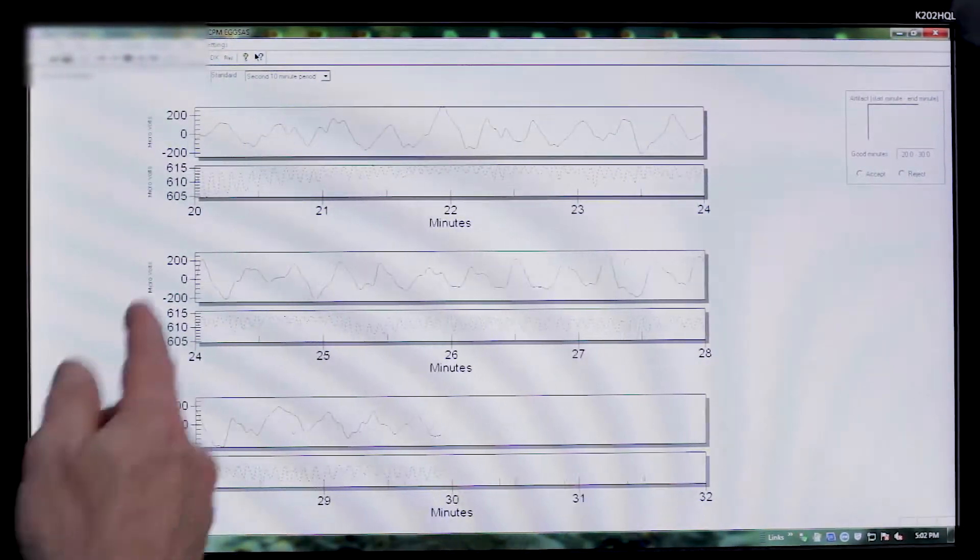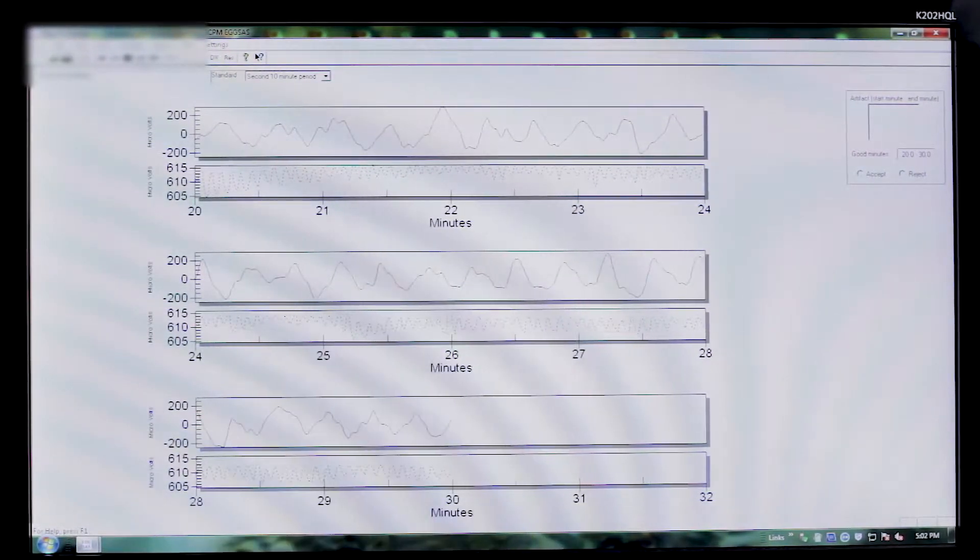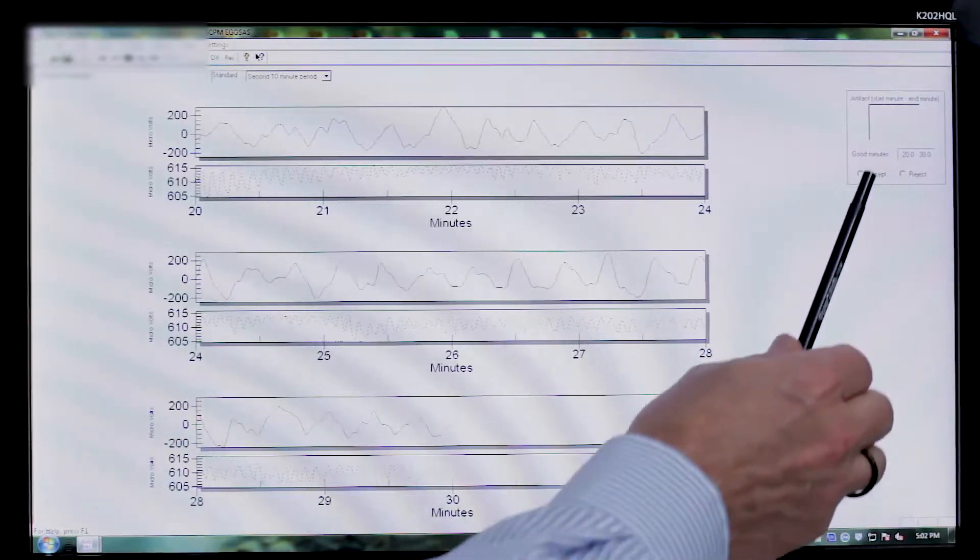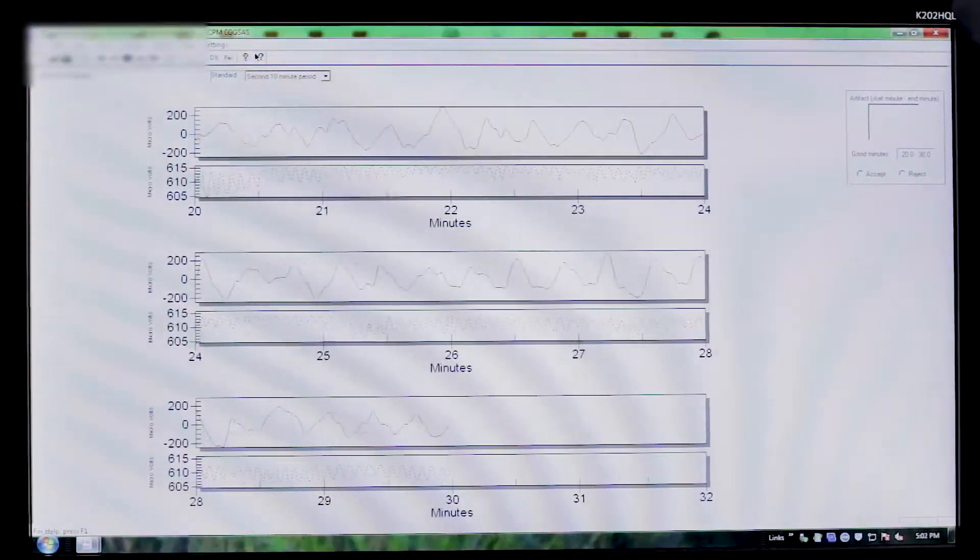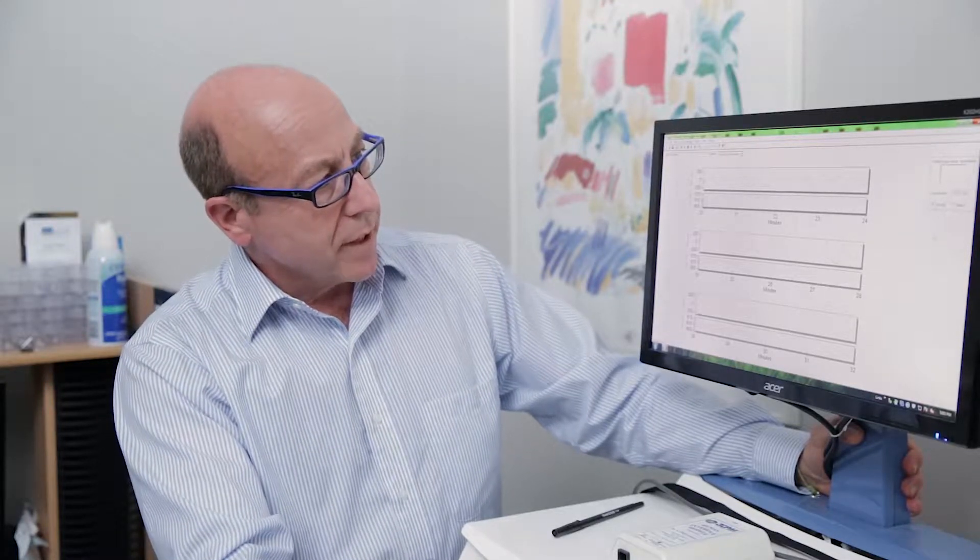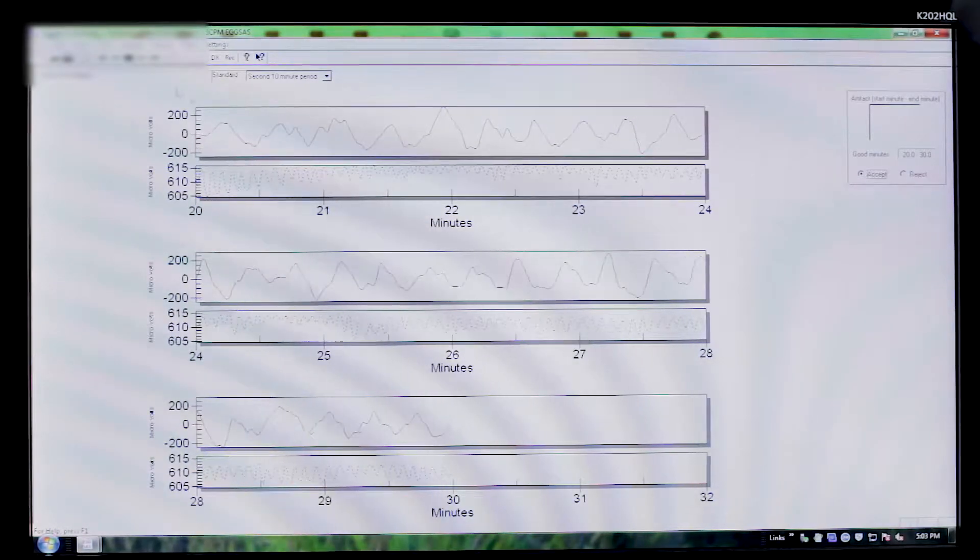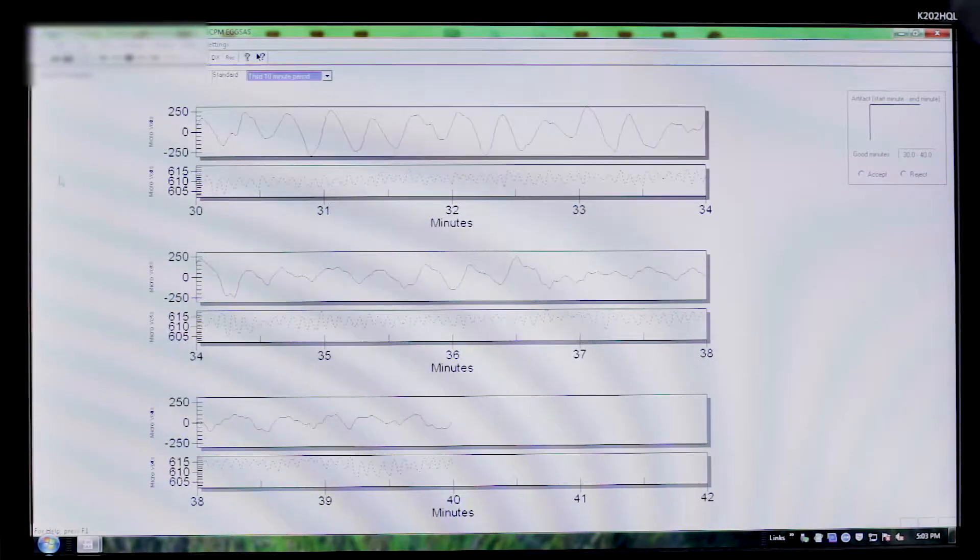I'll go back to my next 10-minute period. Looking at the signal, I see a good strong 3 cycle per minute signal. I'm going to look at my artifact box, and I see nothing written. So I have no artifacts according to the machine calculation. I will select all 10 minutes again, and then go ahead and move to my last 10-minute period.